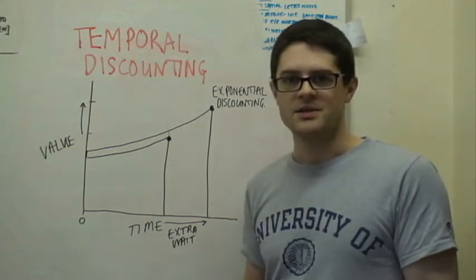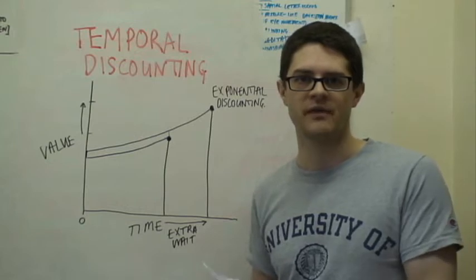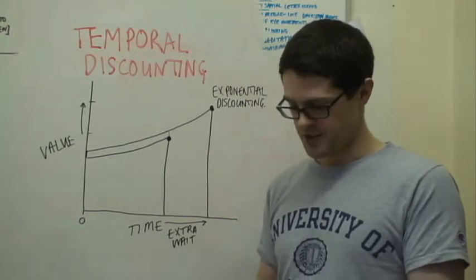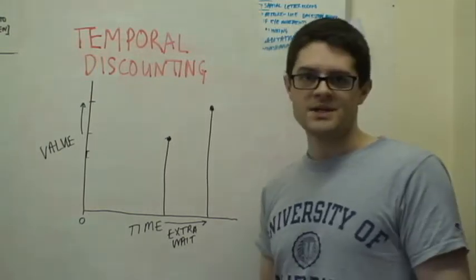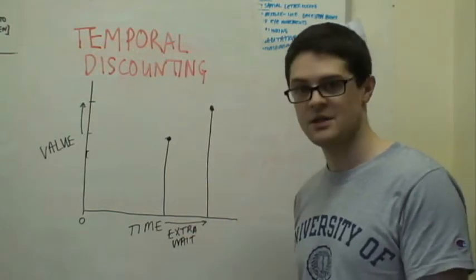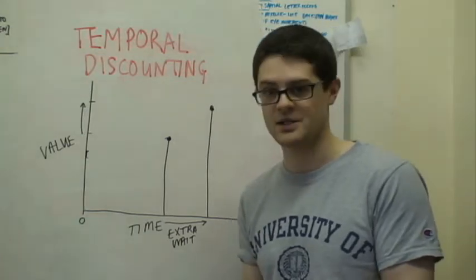So what actually happens is you get what people do is they reverse their preferences over time. Now this is where we get the descriptive model. It's basically very similar, it's just that the curves are different. So I'll just again draw it and explain it.